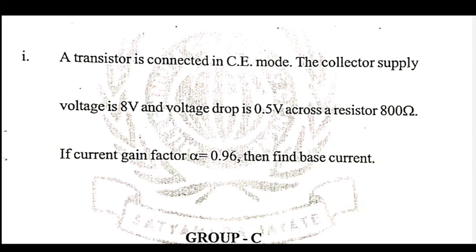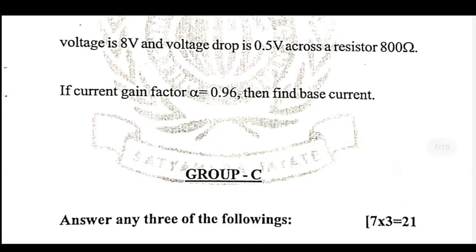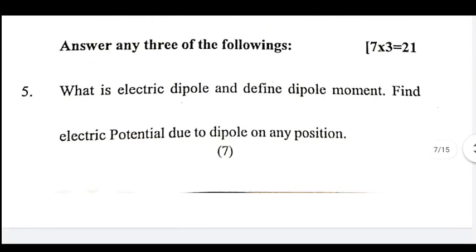A transistor is connected in CE mode. The collector supply voltage is 8 V and the voltage drop is 0.5 V across a resistor of 800 ohm. If the current gain factor alpha is 0.96, find the base current. What is an electric dipole and electric dipole moment? Find the electric potential due to a dipole at any position.